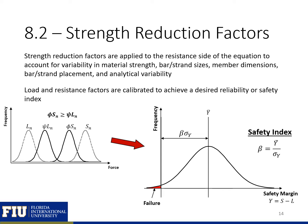On the next few slides, we're going to talk briefly about strength reduction factors. Strength reduction factors are applied to the resistance side of the equation to account for variability in material strength, bar and strand size, member dimensions, bar/strand placement, and analytical variability. The load and resistance factors are calibrated to achieve a desired reliability or safety index — essentially a beta greater than 3 or 3.5 — to limit the probability of failure of a structure.